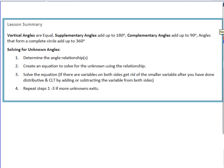In this lesson, we reviewed angle relationships: vertical angles are equal; supplementary angles add up to 180 degrees; complementary angles add up to 90 degrees; and angles that form complete circles add up to 360 degrees. The process for solving for unknown angles involves determining the angle relationship, creating an equation using that relationship, and then solving the equation. We also learned that if there are variables on both sides, get rid of the smaller variable — after distributive property and combining like terms — by adding or subtracting the variable from both sides.